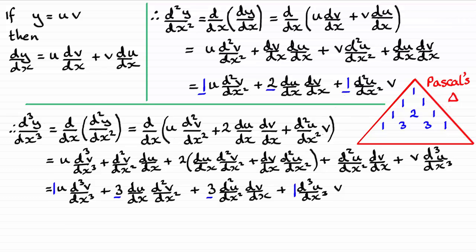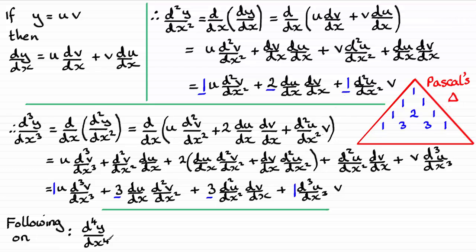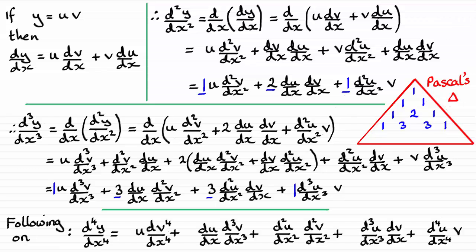This leads us to ask: what would d⁴y/dx⁴ be? You might want to pause the video and write down what you think the result would be. Following the pattern: the u-side goes u, du/dx, d²u/dx², d³u/dx³, up to d⁴u/dx⁴. At the same time, the v-side starts with d⁴v/dx⁴ and reduces by 1 in each term down to v. We just need to put in the coefficients from Pascal's triangle.